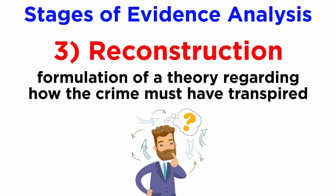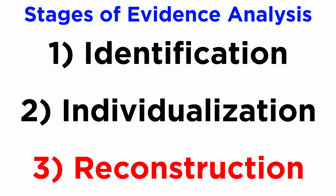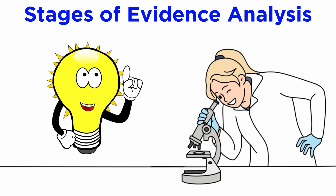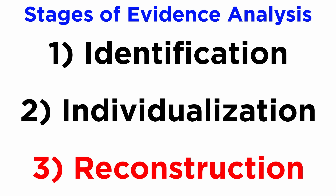The third stage of evidence analysis is reconstruction. By analyzing all the evidence from all the divisions, the investigator forms a theory regarding how the crime must have transpired. However, unlike identification and individualization, reconstruction does not restrict itself within the confines of time and place. It is not necessary for reconstruction to start only after the other stages, nor is it required to be conducted only in the laboratory. Many types of reasoning, logic, and different stages of investigation will be involved. Reconstruction itself consists of a number of steps, which we'll cover next.